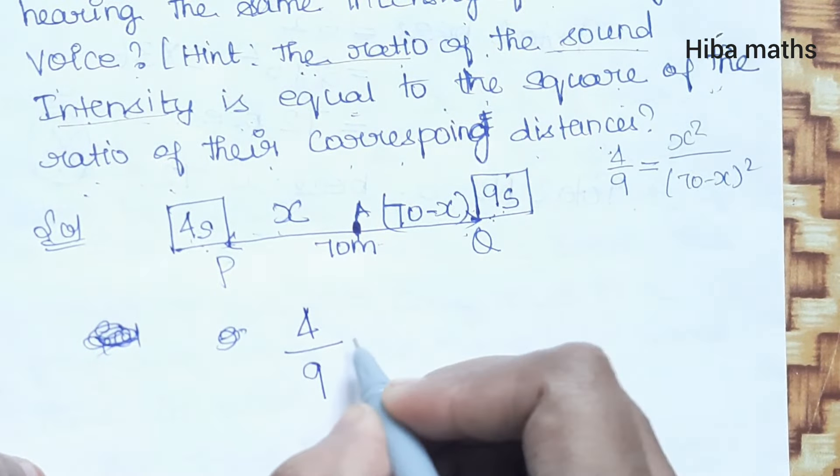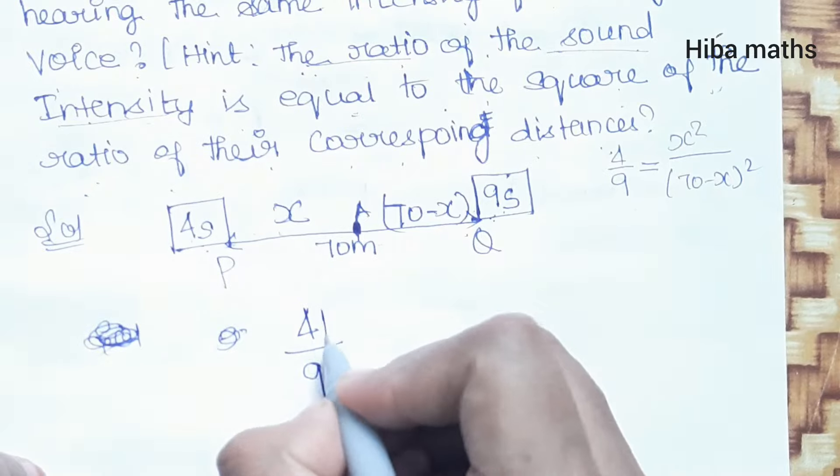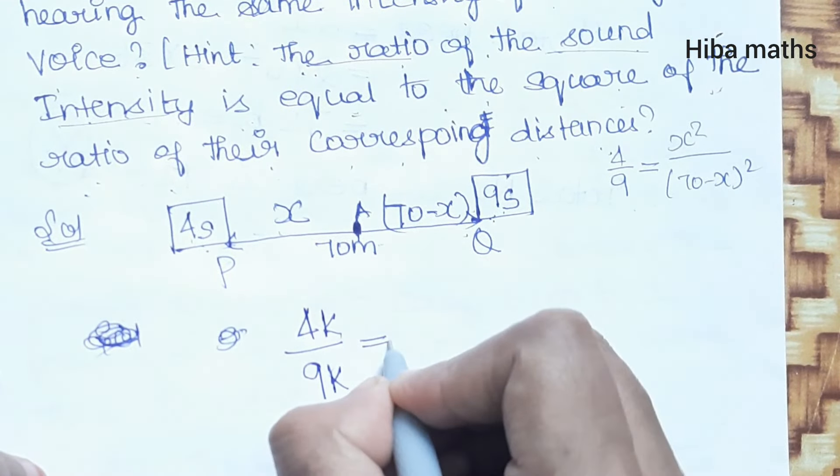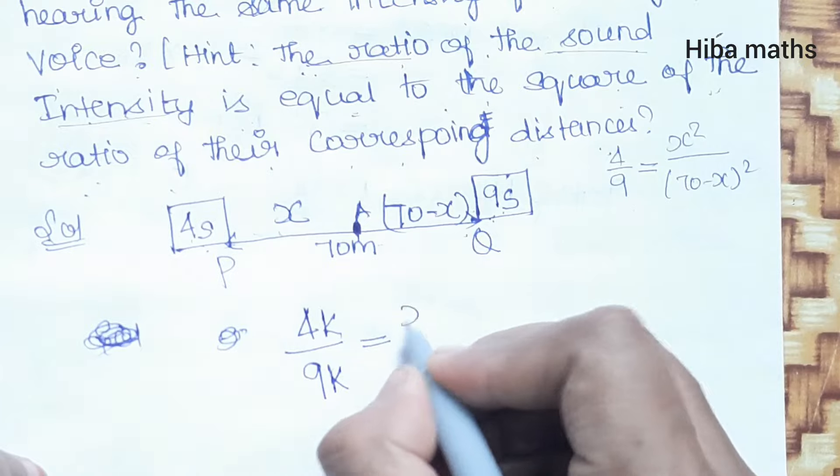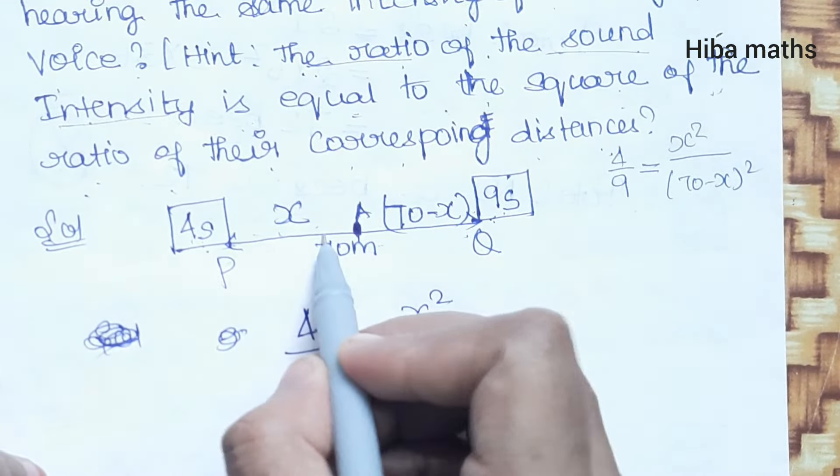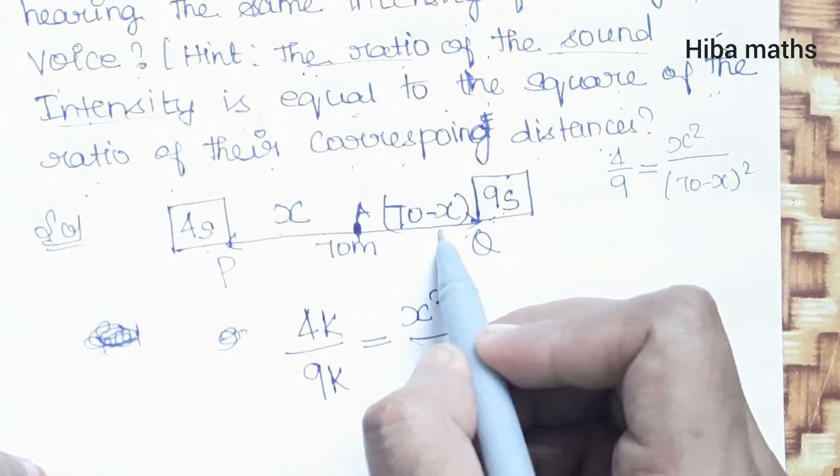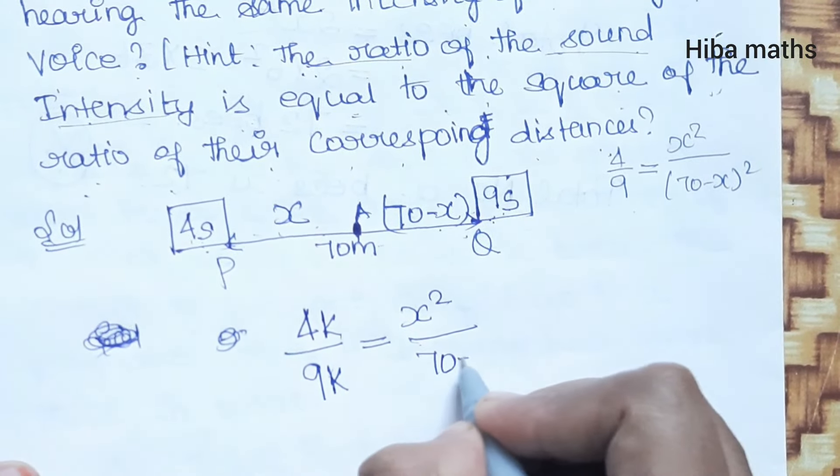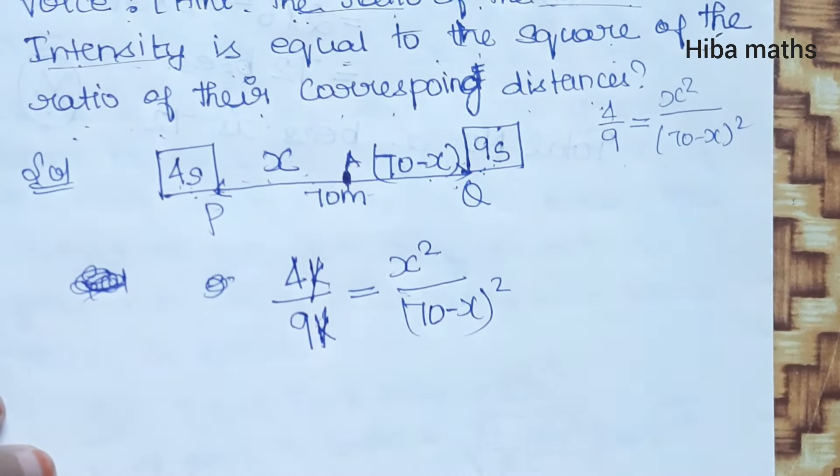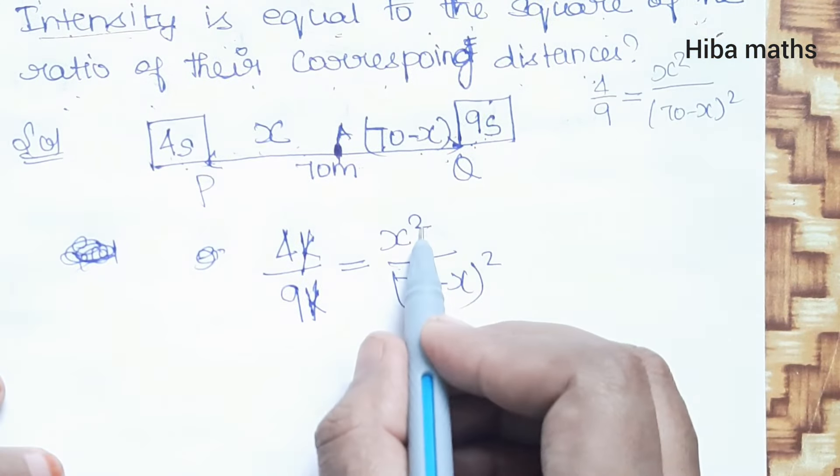4k by 9k equals the square of their corresponding distances. 4 singers at distance x, 9 singers at 70 minus x squared. The k cancels, and we have the squares.